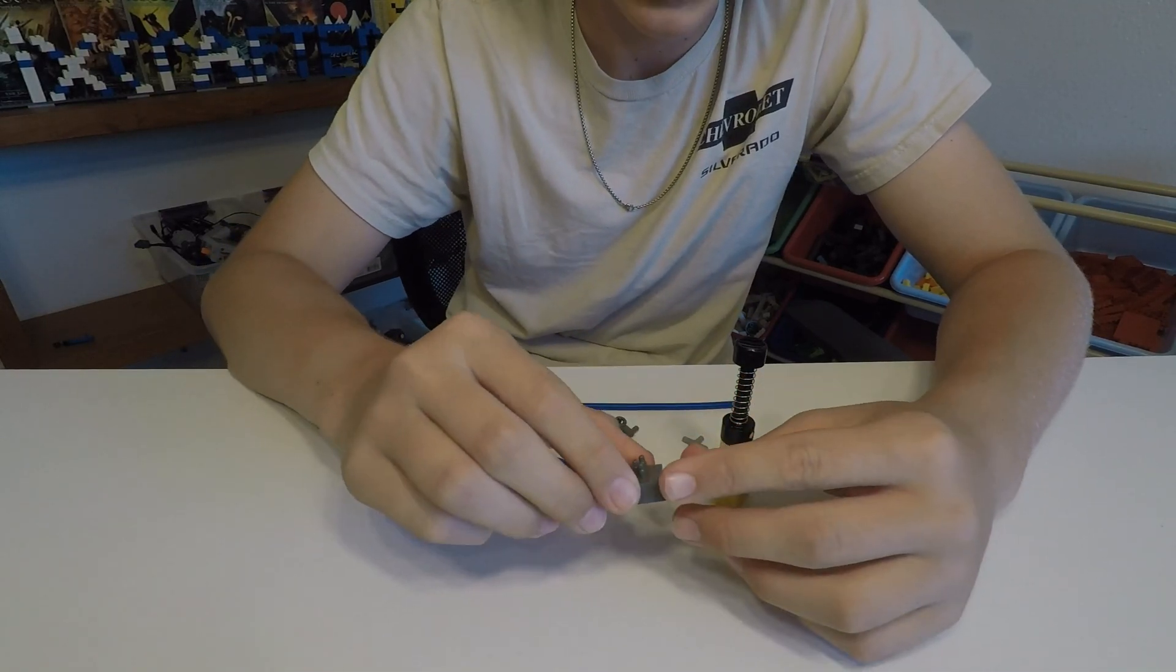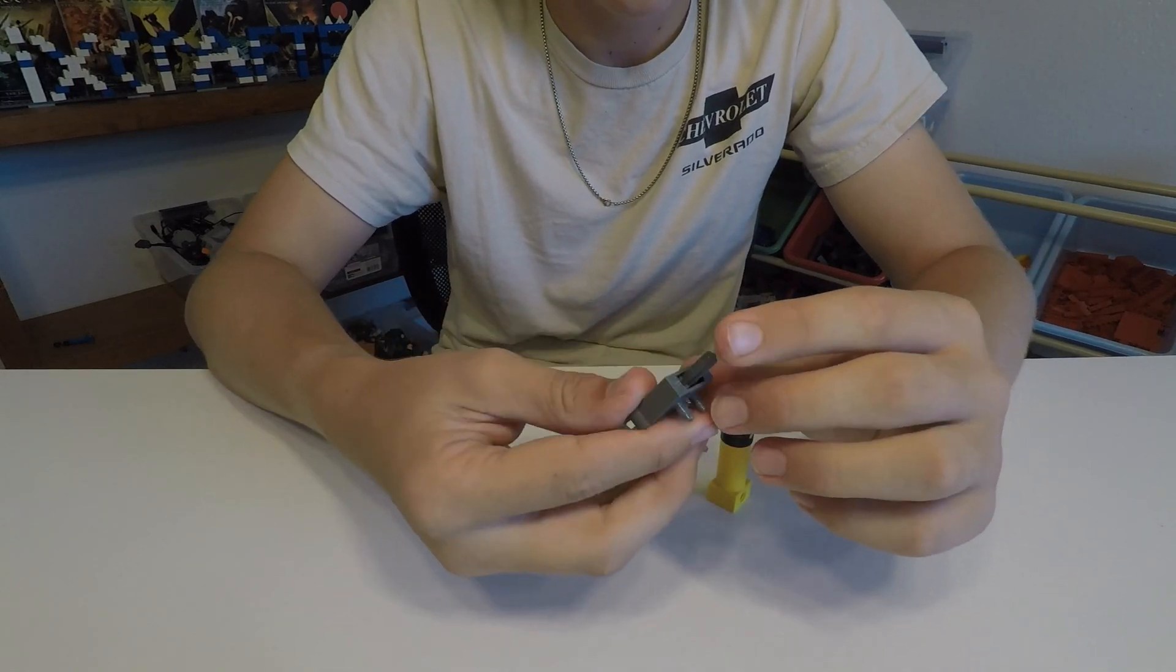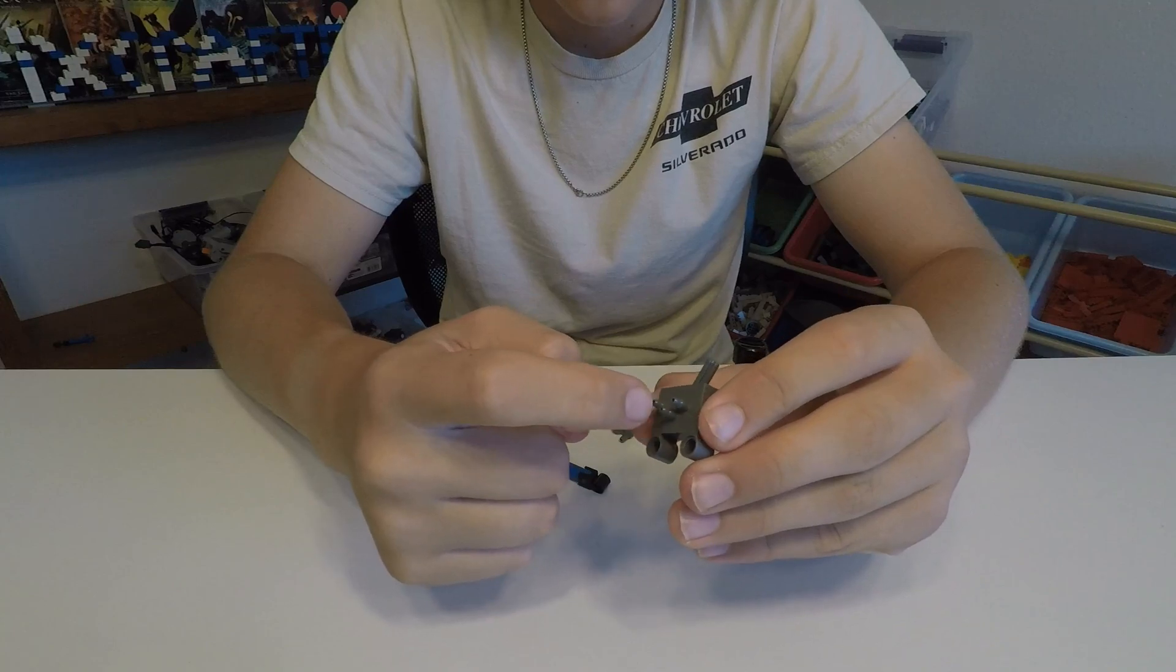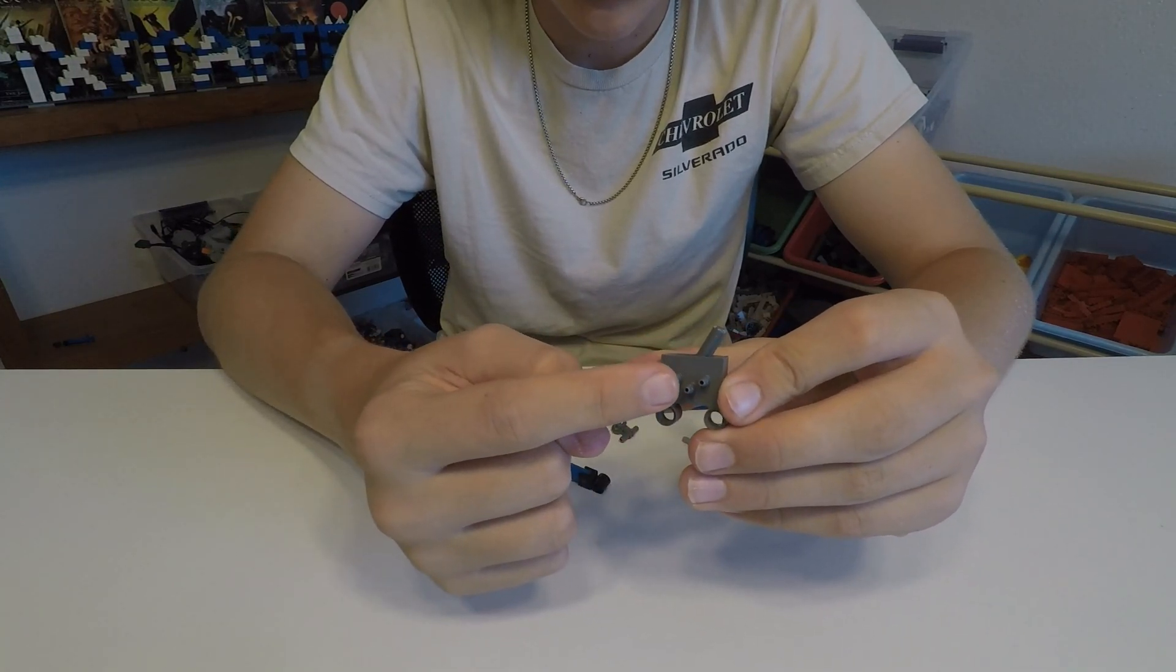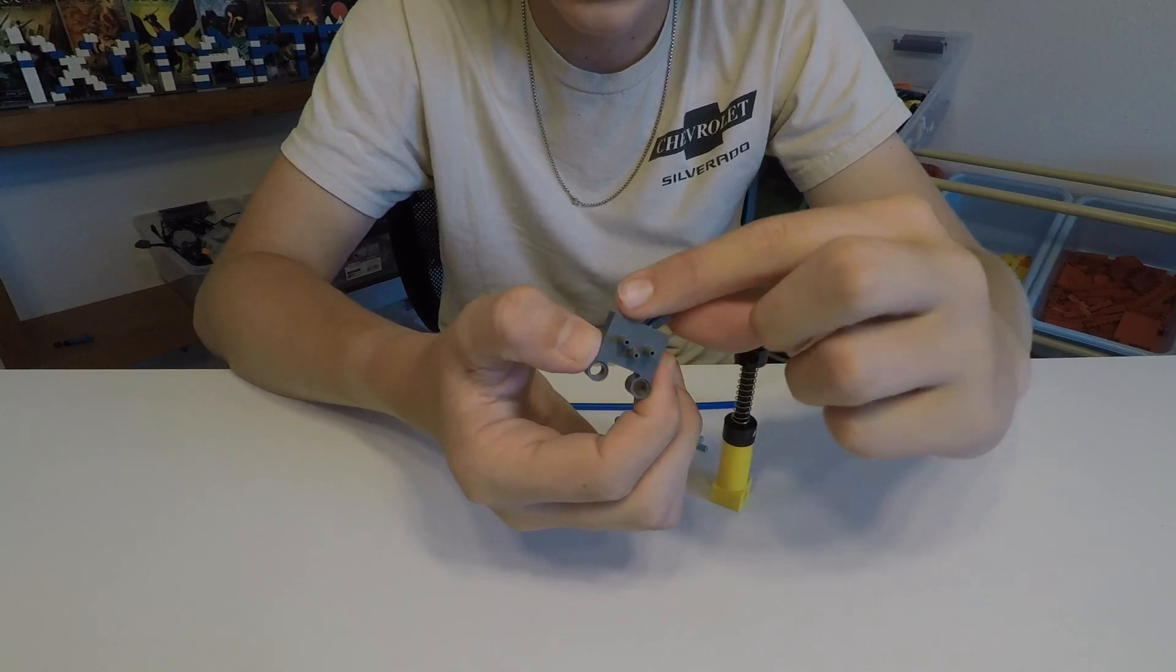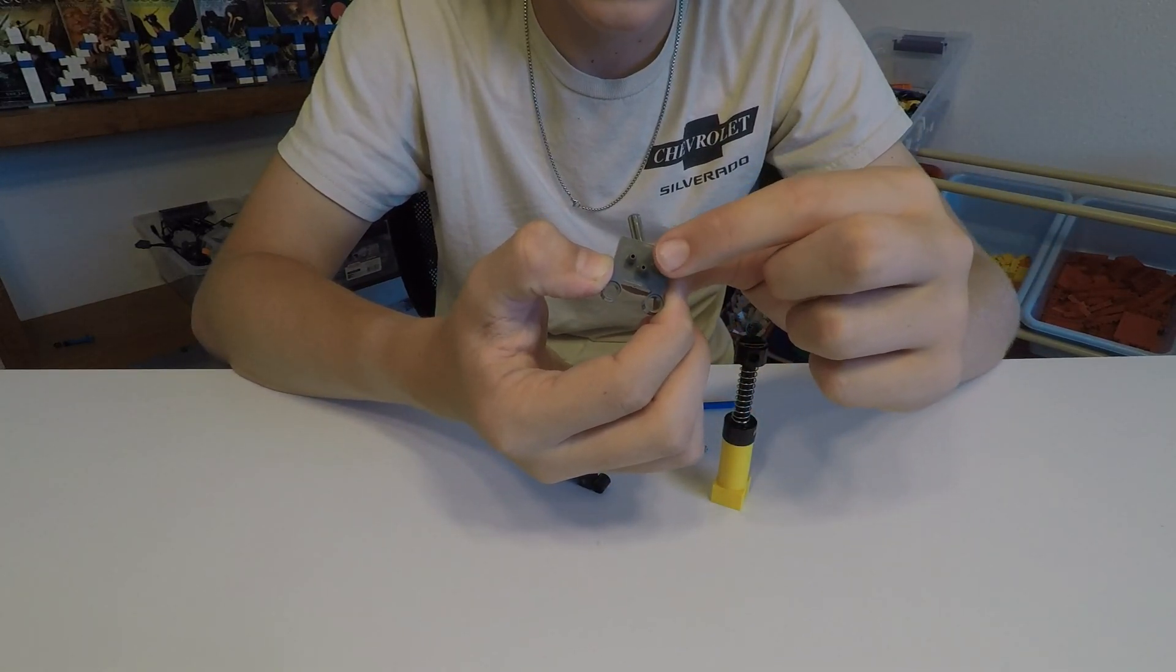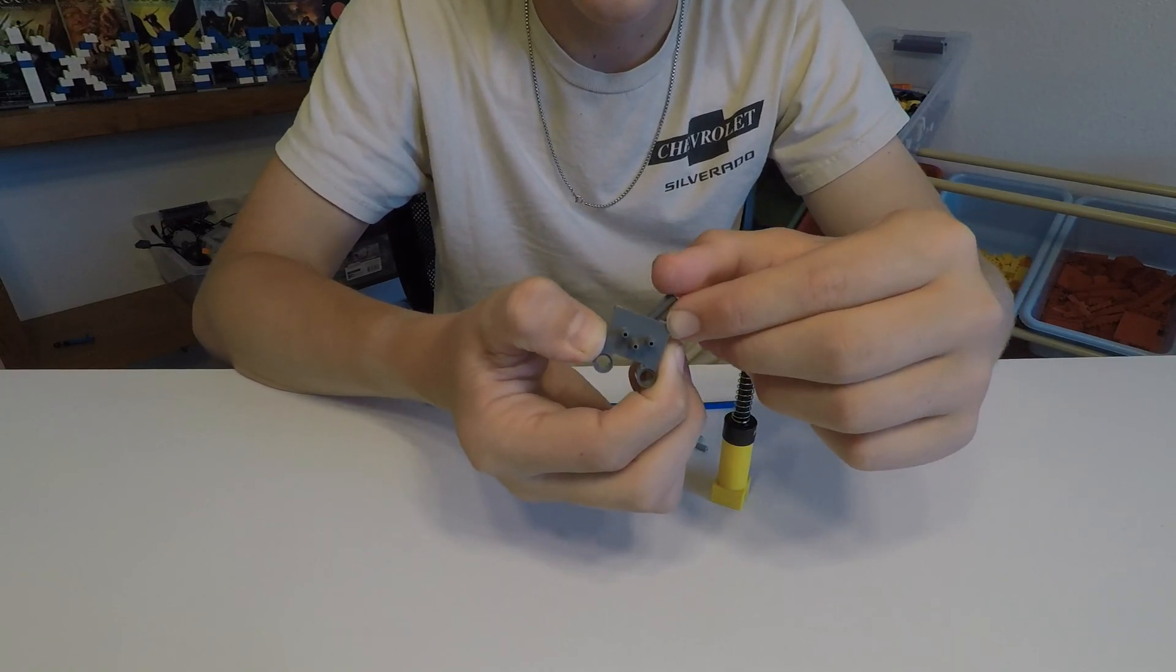This next piece is a valve. You turn this valve like that. Air flows through this hole in the bottom and it will come out of this hole. And you switch it like this, air will flow through here and come out of this hole. So you switch it to the opposite side that you want air to come out of.